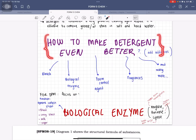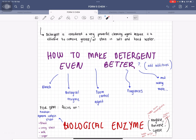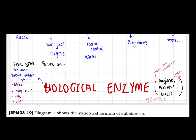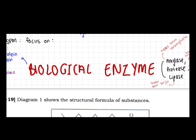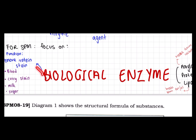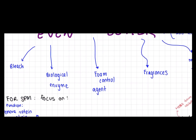If the question asks how to make detergent even better, you answer: add biological enzymes. Examples of biological enzymes are amylase, protease, and lipase. Their function is to help remove protein stains like blood, curry stain, milk, and sugar. That's all for now. Don't forget to check out the description box or the comments below to get access to the Google Form link so you can do your own self-test. Thank you.